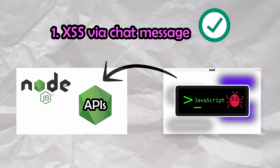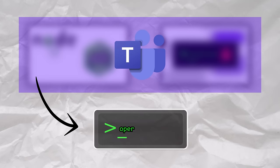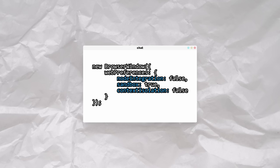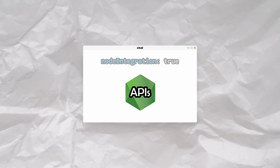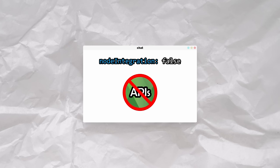Let's move on to the next exploit in the chain to see how we can escape the context of the renderer process and gain access to Node's powerful APIs. Each renderer process window is created with an instance of the BrowserWindow class. These classes have three important security flags to consider: NodeIntegration, Sandbox, and ContextIsolation. NodeIntegration controls whether the renderer process has direct access to Node APIs. If enabled, arbitrary JavaScript could directly call these APIs, causing a system-wide RCE. Needless to say, this was set to false.